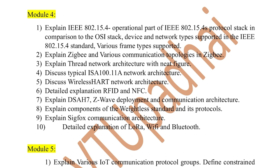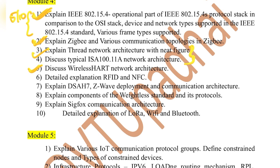Moving to the fourth module, which has nearly 10 to 12 topics, though I've listed only those you need to cover. Start with IEEE 802.15.4 — a very important question with four to five subtopics, which could be asked for five or 10 marks. Next, Zigbee and its various communication protocols and topologies — also very important. Then Thread architecture, which is very simple, or the typical ISA 100.11a — one of these two could be asked. Then wireless HART network architecture, also simple, all around five marks, and two protocols could be clubbed together.